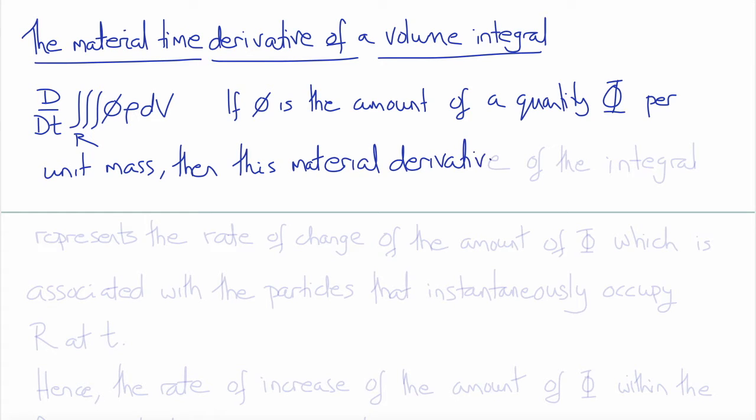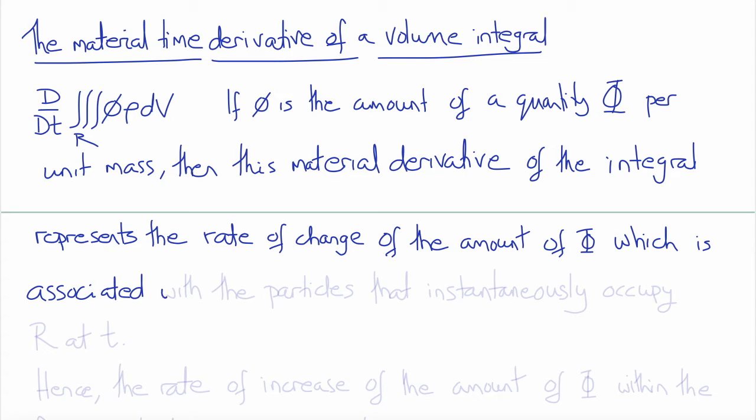This material derivative of the integral therefore represents the rate of change of the amount of capital phi, which is associated with the particles that instantaneously occupy the region R at time t. Remember it's a material derivative so it's a rate of change as seen by the material particles.